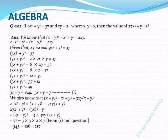9x² + y² = 37 is given. This is similar to the equation (a + b)². If x and y are in the place of a and b, then we can write (x + y)² = x² + y² + 2xy. From this equation, x² + y² = (x + y)² - 2xy. Given that xy = 2.